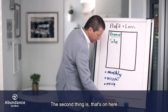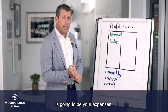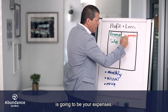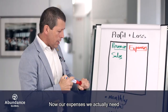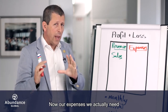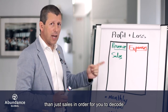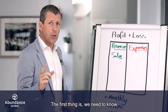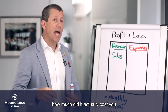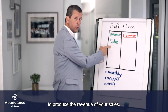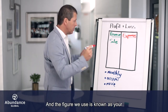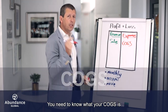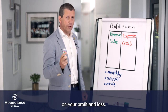The second thing on here is going to be your expenses. Now, our expenses we actually need to break down a little bit further than just sales in order for you to decode what this profit and loss is telling you. The first thing is: how much did it actually cost you to produce the revenue from your sales? The figure we use is known as your cost of goods sold — your COGS. You need to know what your COGS is on your profit and loss.